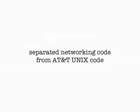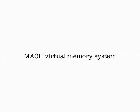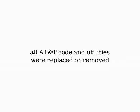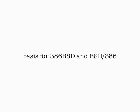By 1989 there was Net/1, which separated the networking code from the AT&T Unix code, allowing for a permissive BSD license. By 1990, 4.3BSD Reno introduced a new virtual memory system and some compatible NFS — however, it was known as a real gamble, hence the Reno moniker. By 1991 we had Net/2, where all AT&T code and utilities were replaced or removed. It ran on the Intel 386 and became the basis for the 386BSD and BSD/386 releases.